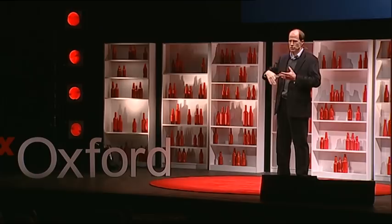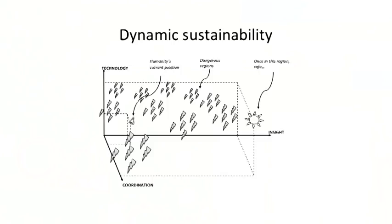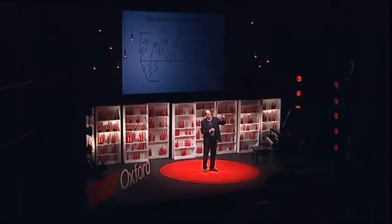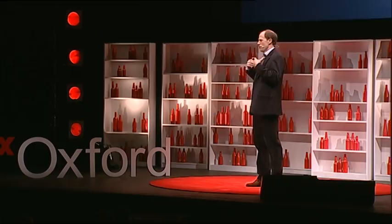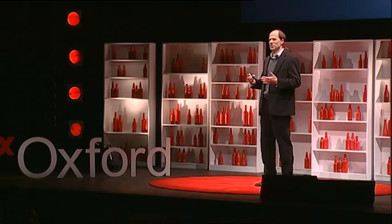One might think in terms of three axes: technology, insight, and coordination — ultimately we want more of all three. This is the way to realize humanity's potential in the long run. But that leaves open the question of whether, in the short term, it's always better to have more of one before the other. Maybe you need a certain level of global coordination before you invent really powerful new weapons technologies or dangerous discoveries in synthetic biology or nanotechnology. What can we actually do to reduce existential risk? That's a topic for another day. But getting to the point where we start to seriously ask ourselves that question is an excellent way to start. Thank you.